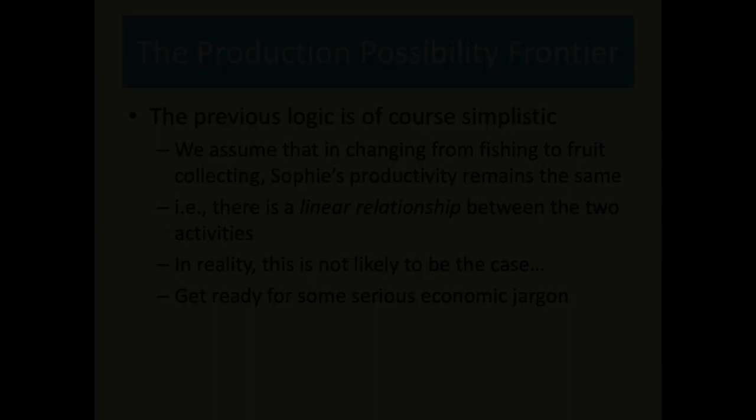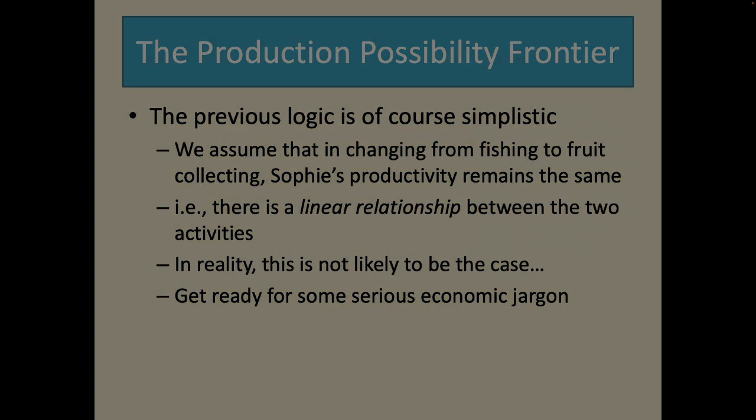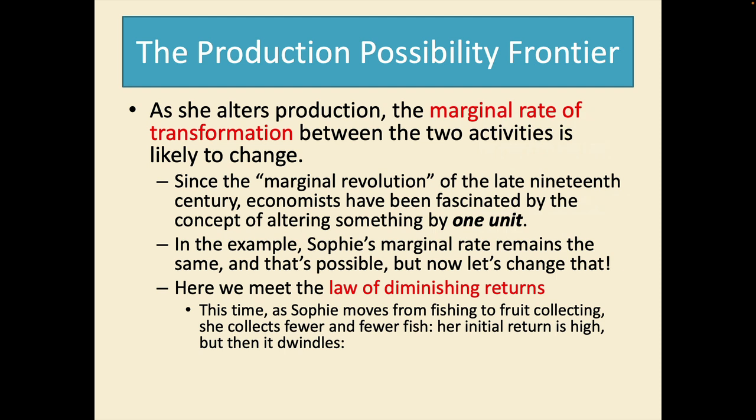Now the previous logic is of course simplistic. We are assuming and this is important to know that in changing from fishing to fruit collecting her productivity remains the same. That is there is a linear relationship between the two activities but in reality that's not likely to be the case. So be prepared, serious economic jargon coming. As she alters production the marginal rate of transformation between the two activities is likely to change.